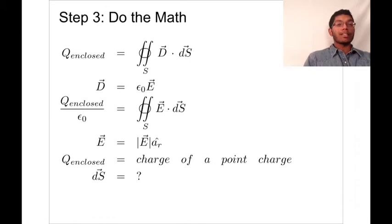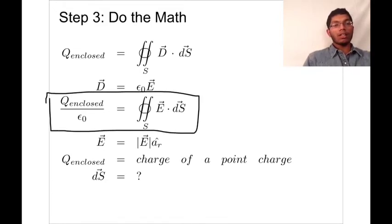All we have to do now is just do some math. So we know that q enclosed is equal to the closed loop surface integral of E dotted with ds. And we know this from the intro video on Gauss's law. We also know that D is equal to epsilon naught times E. So using these two expressions, we get this expression over here. It's the one in the black box.